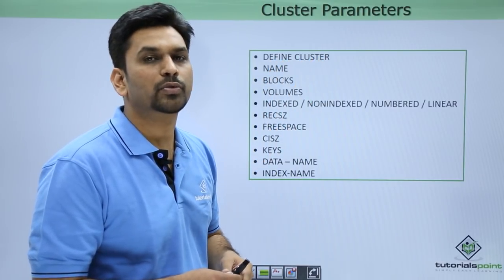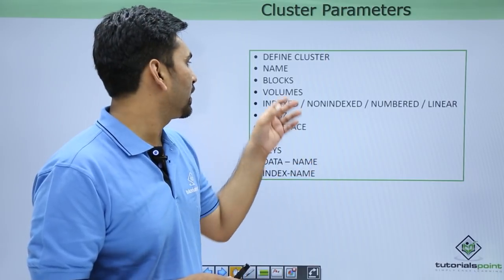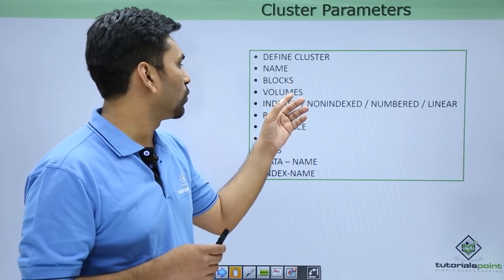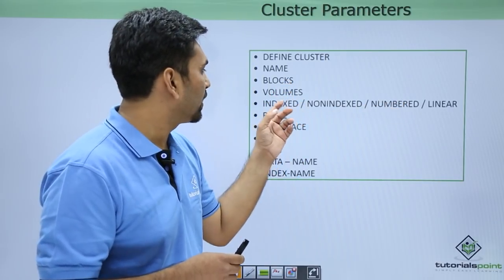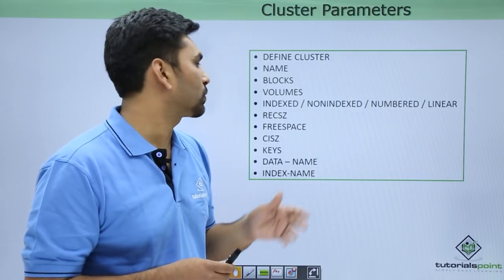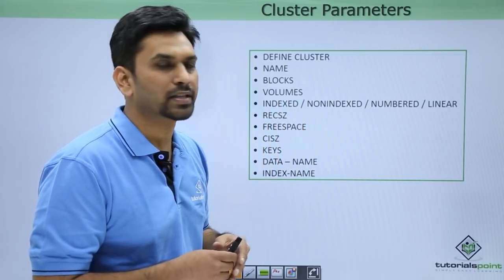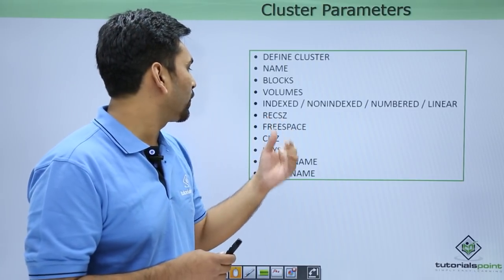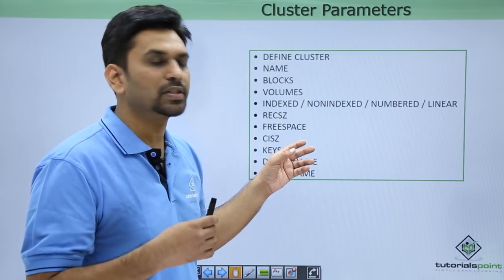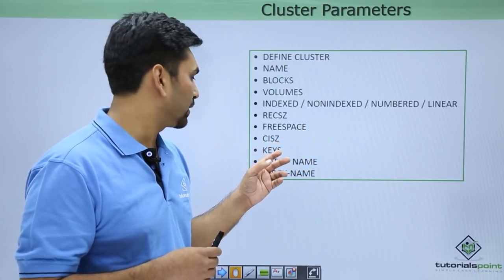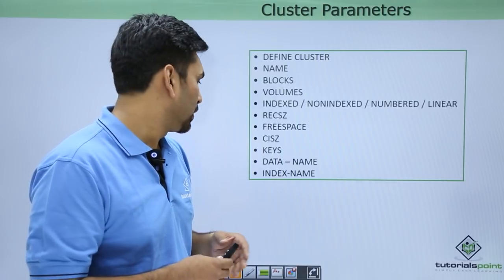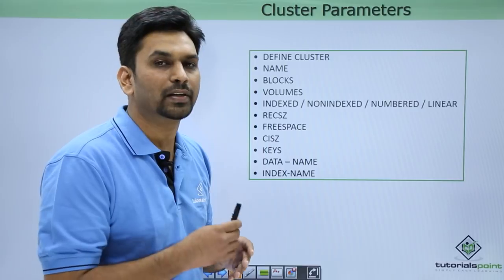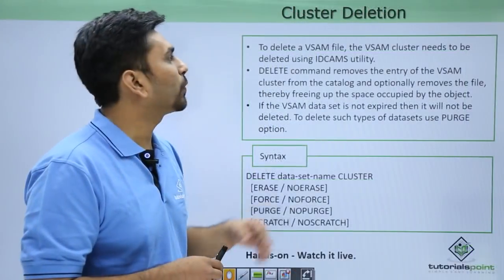These are some of the cluster parameters. First you need to define the cluster keyword under IDCAMS utility, then specify the name of the cluster, then define blocks and volumes. You can choose indexed, non-indexed, numbered, or linear based on your requirement — indexed is for KSDS, non-indexed for ESDS. Then you define record size, free space, control interval size, keys if required, and finally the data name and index name. The index name is mandatory only for KSDS data sets.